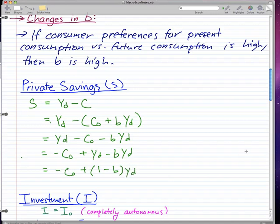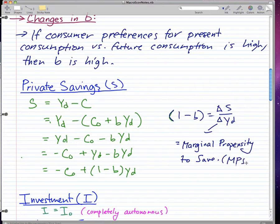This is the final equation that we come up with. And one minus b actually means something. So one minus b is actually equal to the change in S over the change in disposable income, and this stands for the marginal propensity to save, which we can call MPS.